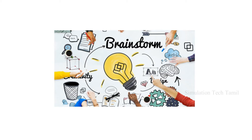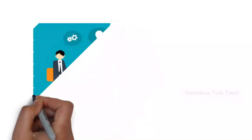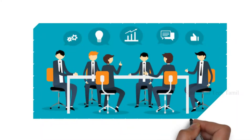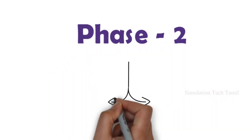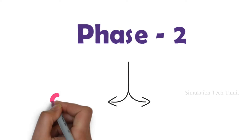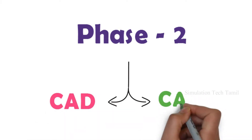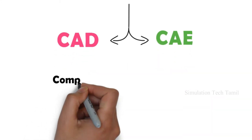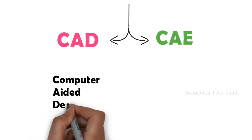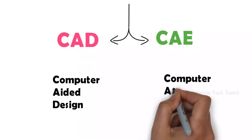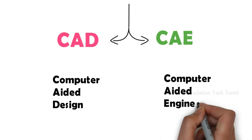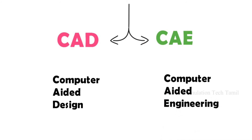In Phase 2, we follow the design process. Phase 2 has two major categories: one is CAD and another is CAE. If you are familiar with CAD, you will know what you do in college. CAD is Computer-Aided Design, and CAE is Computer-Aided Engineering.